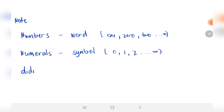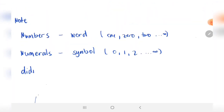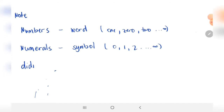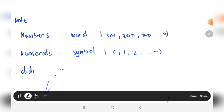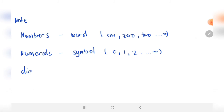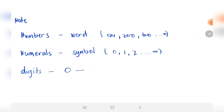Next, digits. For digits, we have only zero up to nine. So remember that, guys.